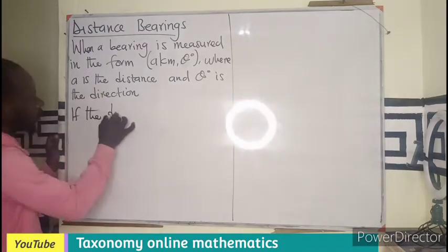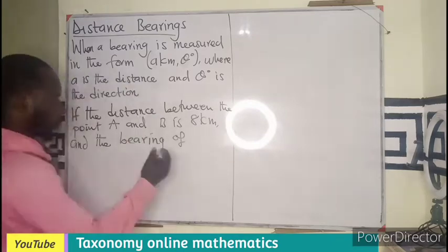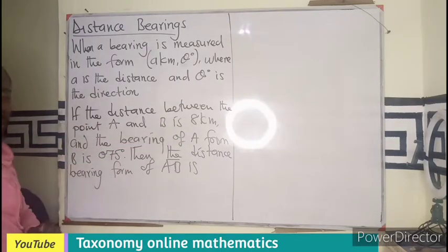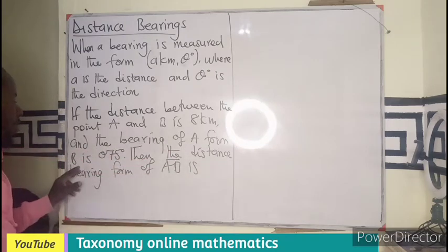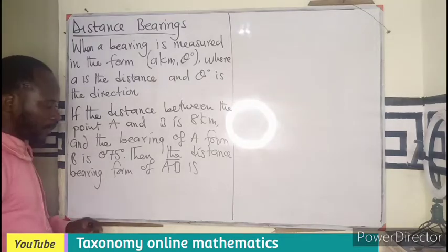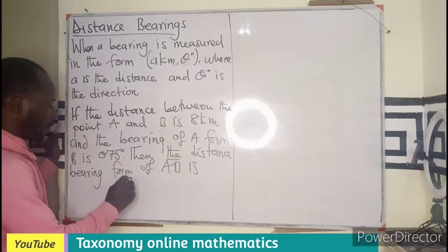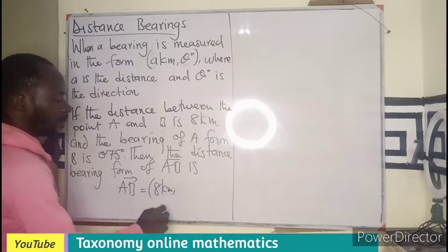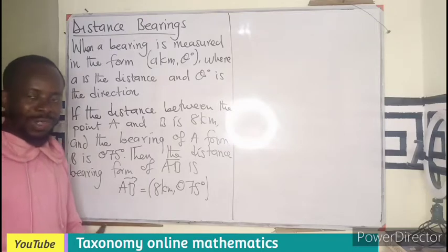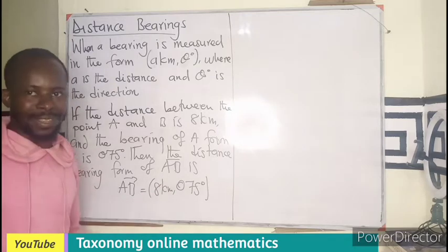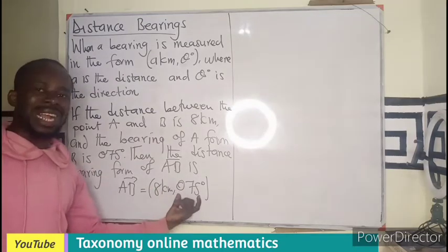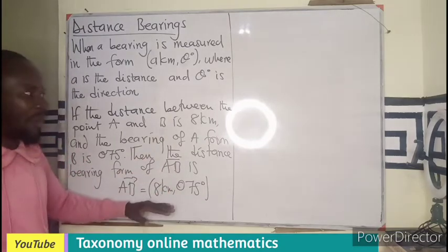So if the distance between points A and B is given as 8 kilometers and the bearing of A from B is given as 75 degrees, then the distance bearing form is written as AB equals 8 kilometers, 075 degrees. The first number is the distance between the two points, whilst the second number is the direction. We can represent this information on a diagram.